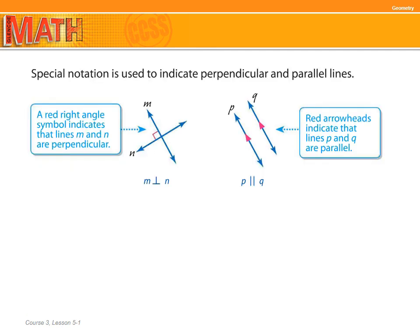This slide covers the special notations used to indicate perpendicular and parallel lines. A red right angle symbol indicates that lines m and n are perpendicular — that right angle tells us they're perpendicular. Red arrowheads indicate that lines p and q are parallel. The symbols read: m is perpendicular to n; p is parallel to q.